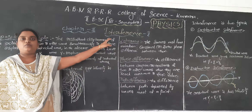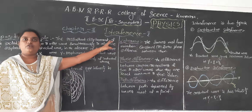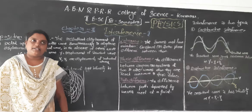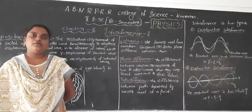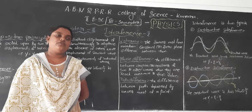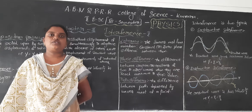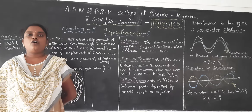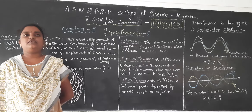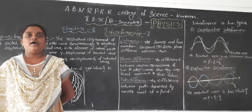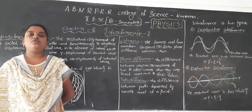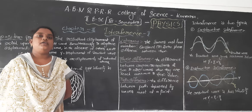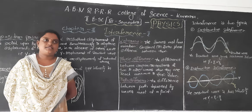Now we discuss about the type based on wavefront. In 1801, Young demonstrated the wave nature of light with his Young's double-slit experiment, and he observed the interference pattern of alternating dark and bright fringes.